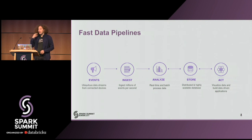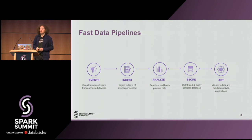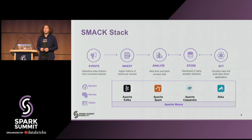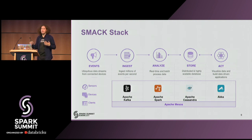If we put that in a pipeline: on the left we have events, those are ingested, analyzed, stored, and then we can act on this data. This is a typical fast data pipeline. One common instantiation is the so-called SMACK stack: S stands for Spark, M is Mesos as the underlying layer gluing different tools together, A stands for Akka as the acting system at the end for visualizing data or notifying users, C stands for Apache Cassandra, and K is our ingestion queue Apache Kafka.